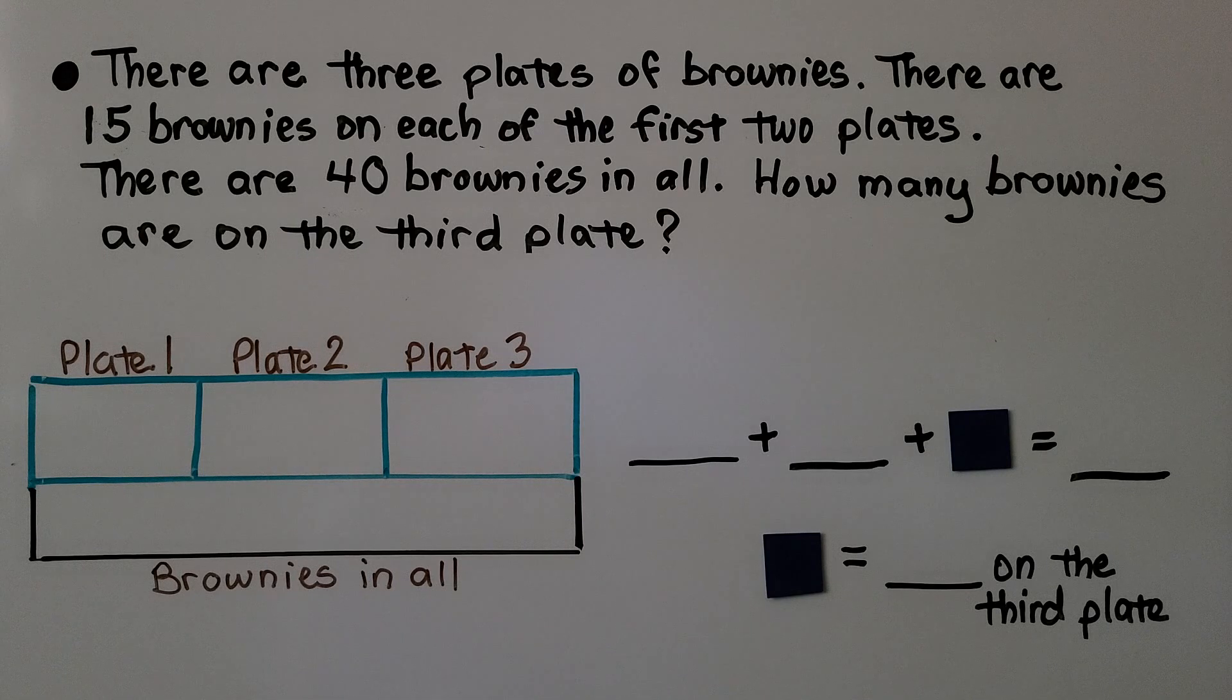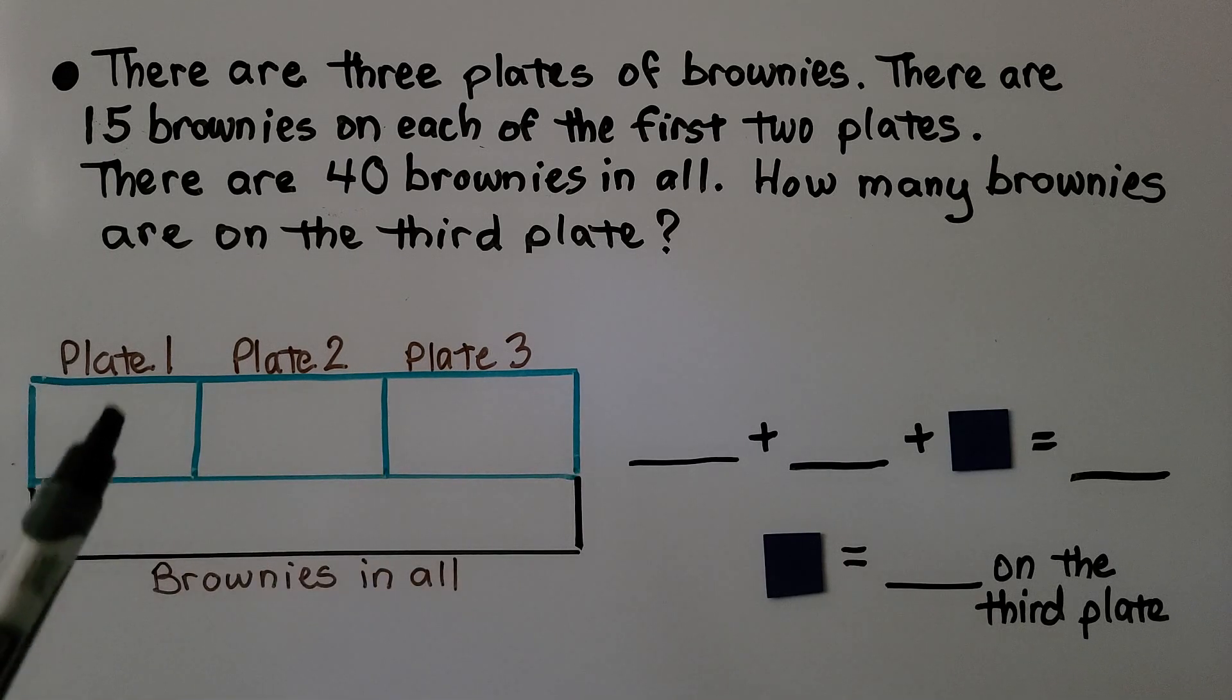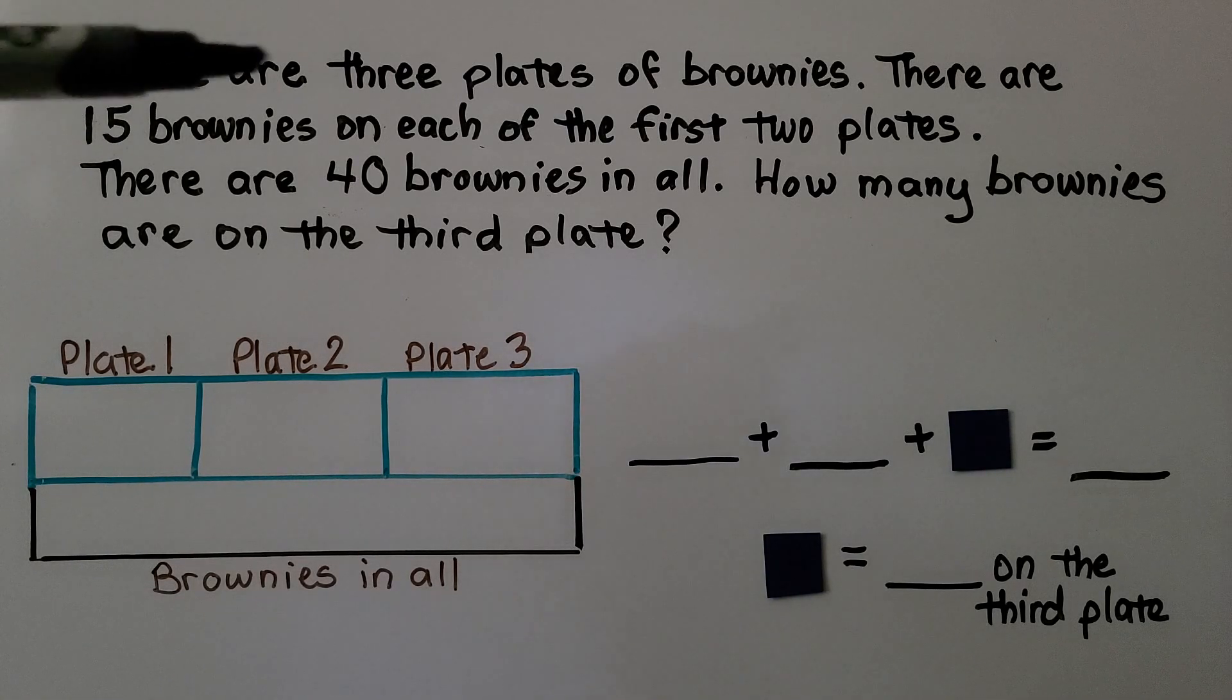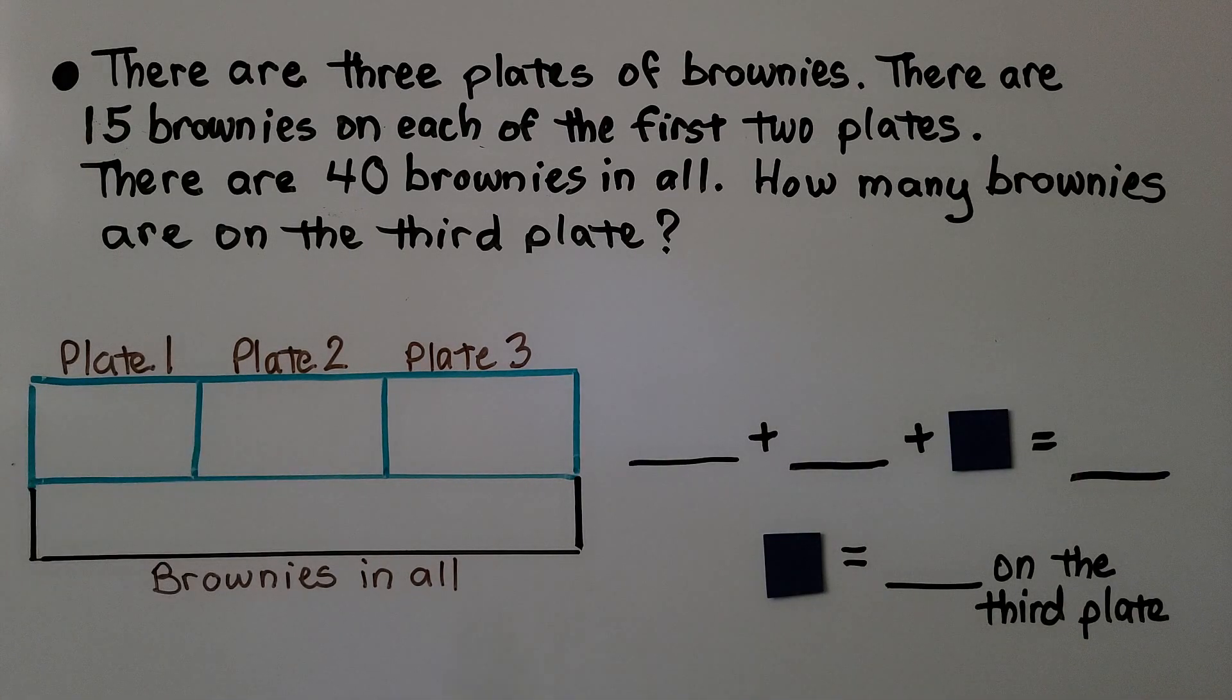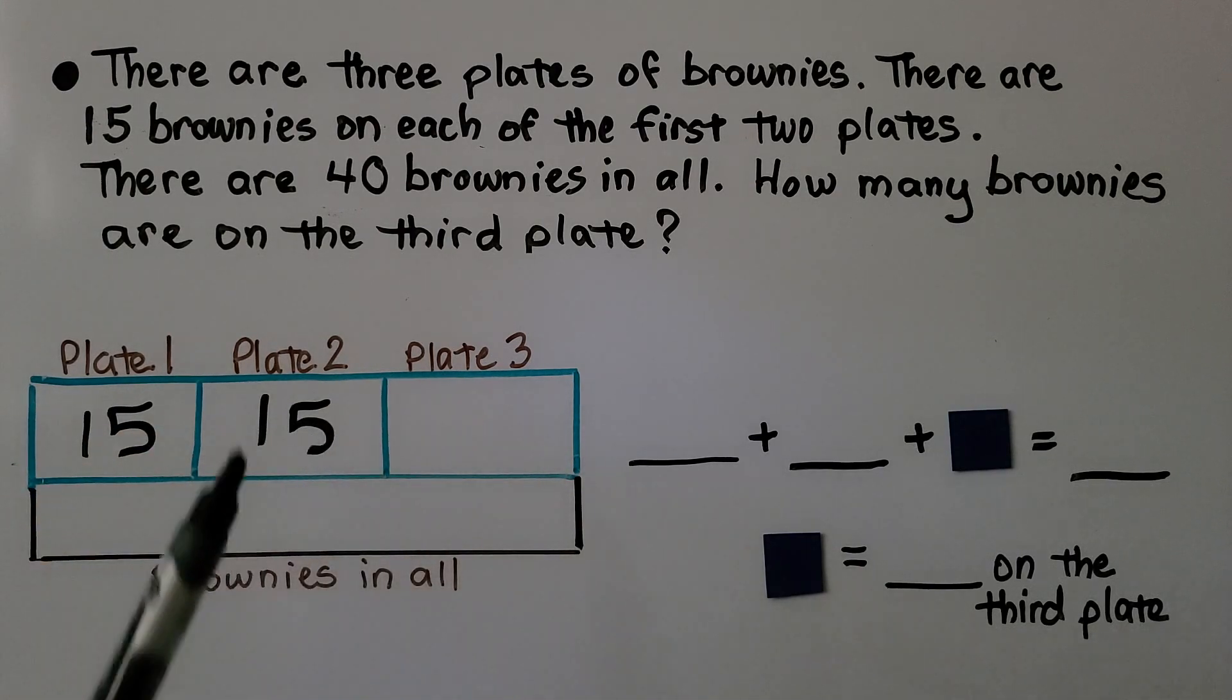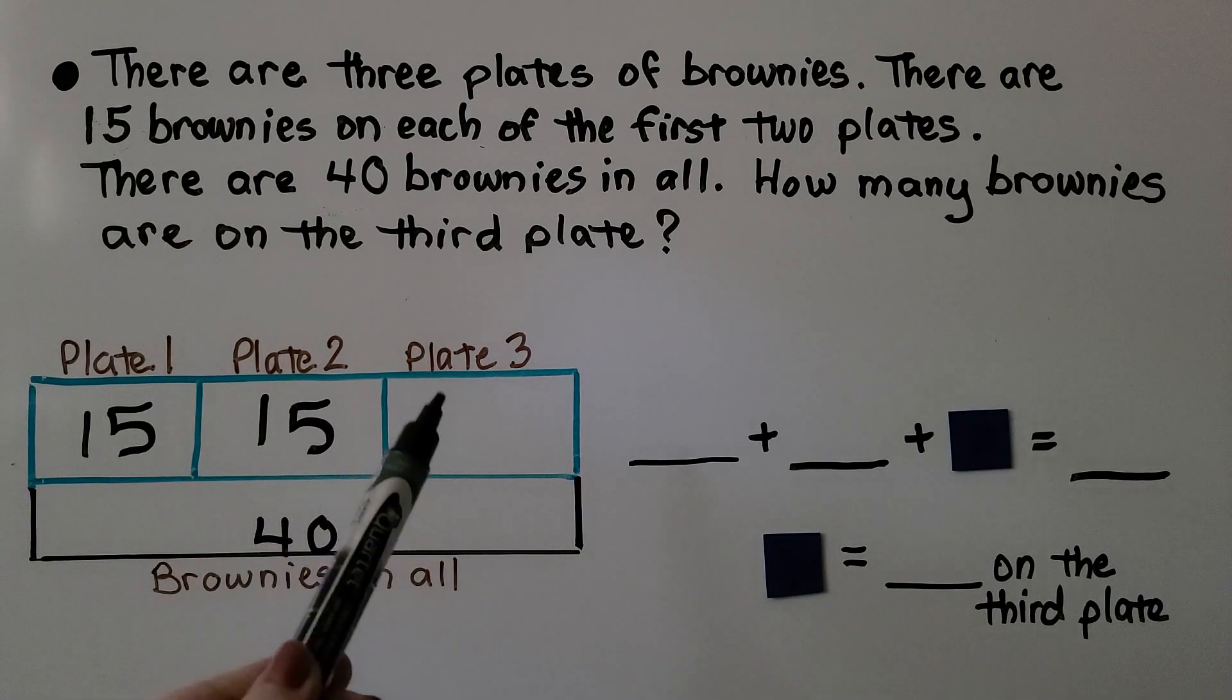This problem says there are 3 plates of brownies. There are 15 brownies on each of the first two plates. There are 40 brownies in all. How many brownies are on the third plate? So now we have 3 boxes in our bar graph. We have plate 1, plate 2, plate 3. We know there are 15 brownies on each of the first two plates. That means 15 on this plate, 15 on this plate, and there's 40 brownies in all. We need to find this missing addend.